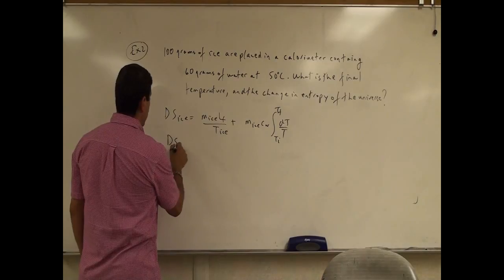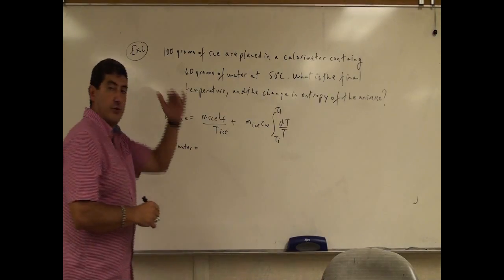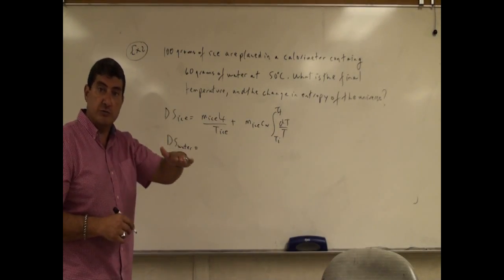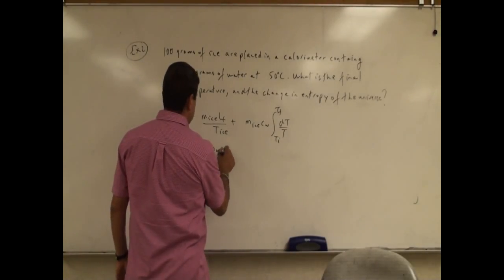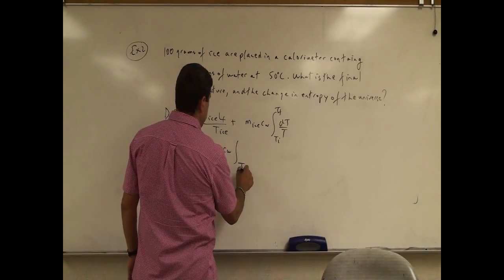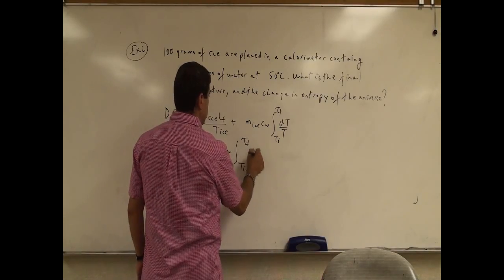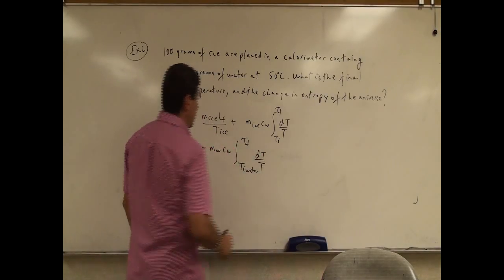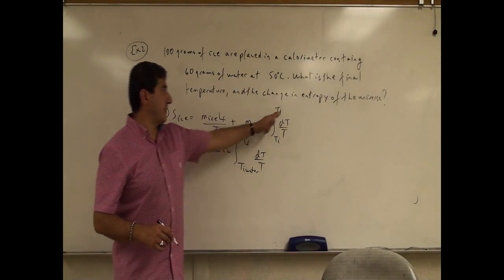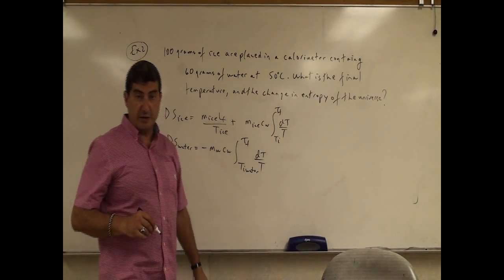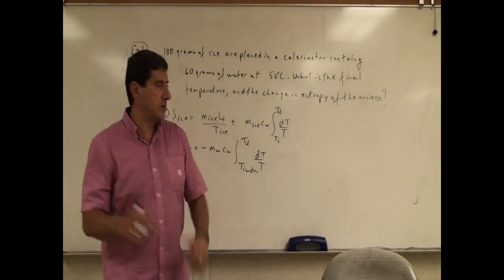The change in entropy of the water is going to be how much heat it took for the water's temperature to go down. So it's going to be minus the mass of the water times the specific heat of water, integrated from T initial of water to T final, of dT over T. Now before we do this change in entropy question, we have to find out what is the final temperature of the mixture. So let's do a regular calorimetry problem.